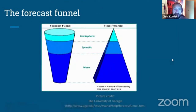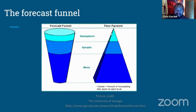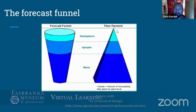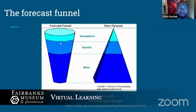This is what we call the forecast funnel. On the right side we have time and on the left side we have scale. We start with the largest scale — the hemispheric or planetary scale — at the top, which covers the greatest area. You spend the least amount of time focusing on this type of weather. Then we move down to synoptic scale.